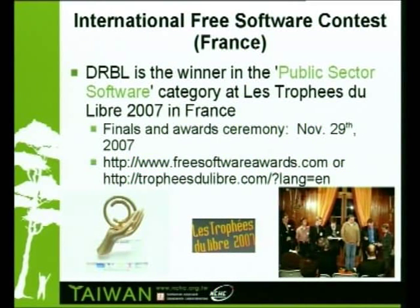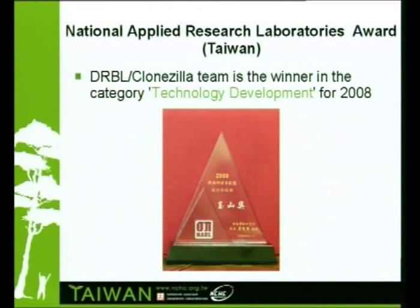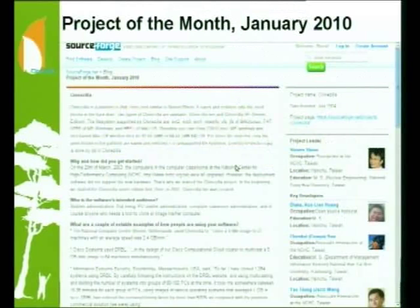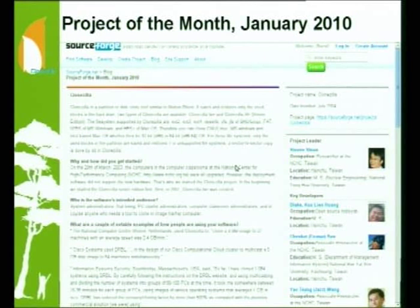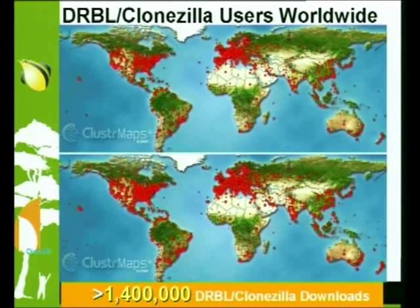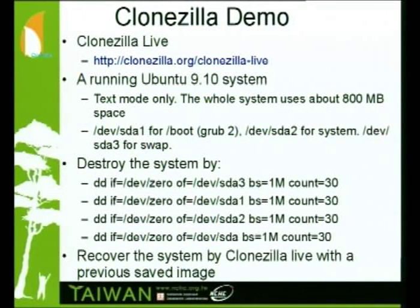The project has received some awards: first, in France in the public sector software award; then from the National Applied Research Laboratory in Taiwan; and a national award from the premier in Taiwan. Currently, Clonezilla is the project of the month on SourceForge — you can check the front page. Users in Taiwan are mostly from primary schools or high schools, needing a free tool for massive deployment. Worldwide, there are more than 1.4 million downloads of these two software packages.